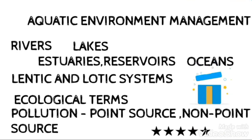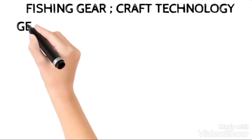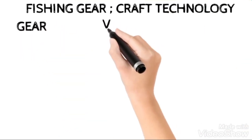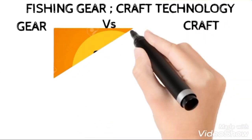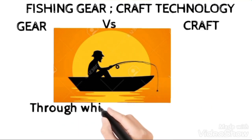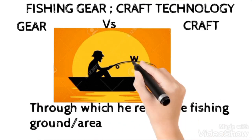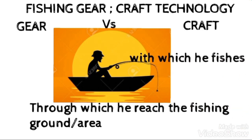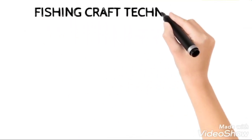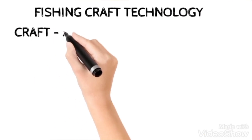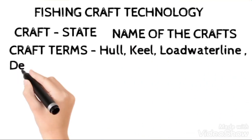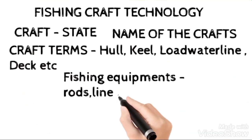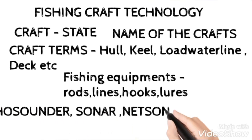Next is the Fishing Gear and Craft Technology. Before moving into this, I wish to have a distinction that this is the often confused term. Consider that fishing - through which he reached the fishing ground is the craft, and through which he fishes is the gear. Under the Fishing Craft Technology, craft is ultimately that vessel. So you should be clear with what craft belongs to which, and then craft terms like hull, keel, including the deck equipments and echo sounder or sonar or the general terms.